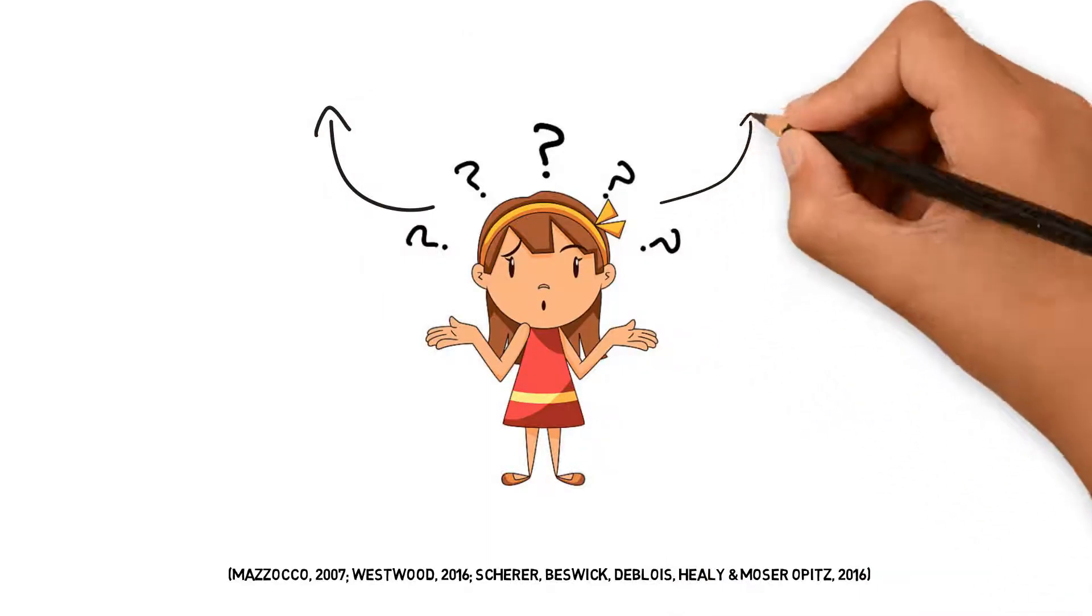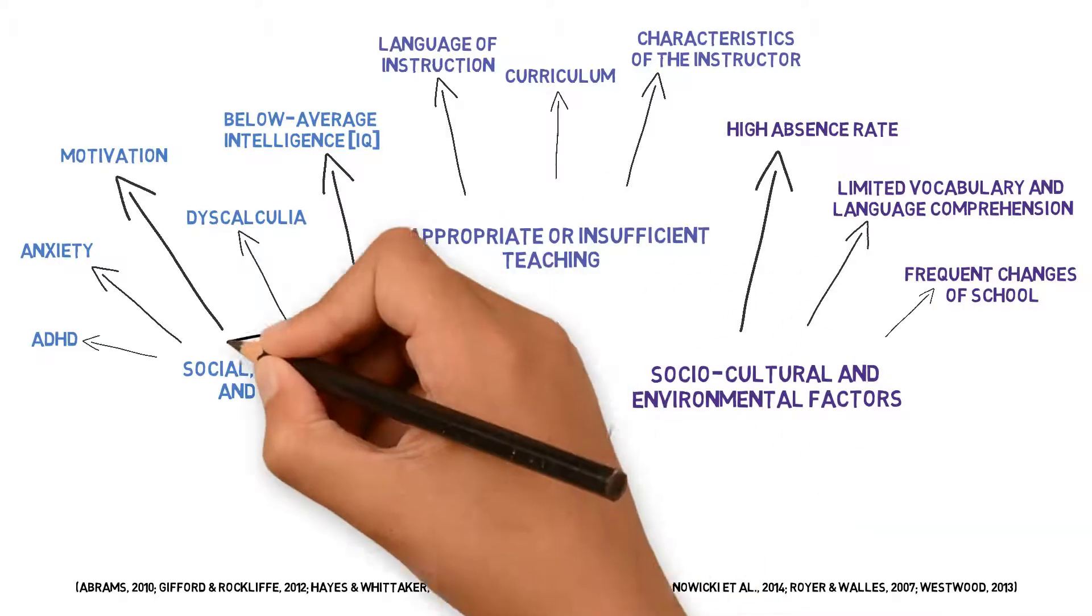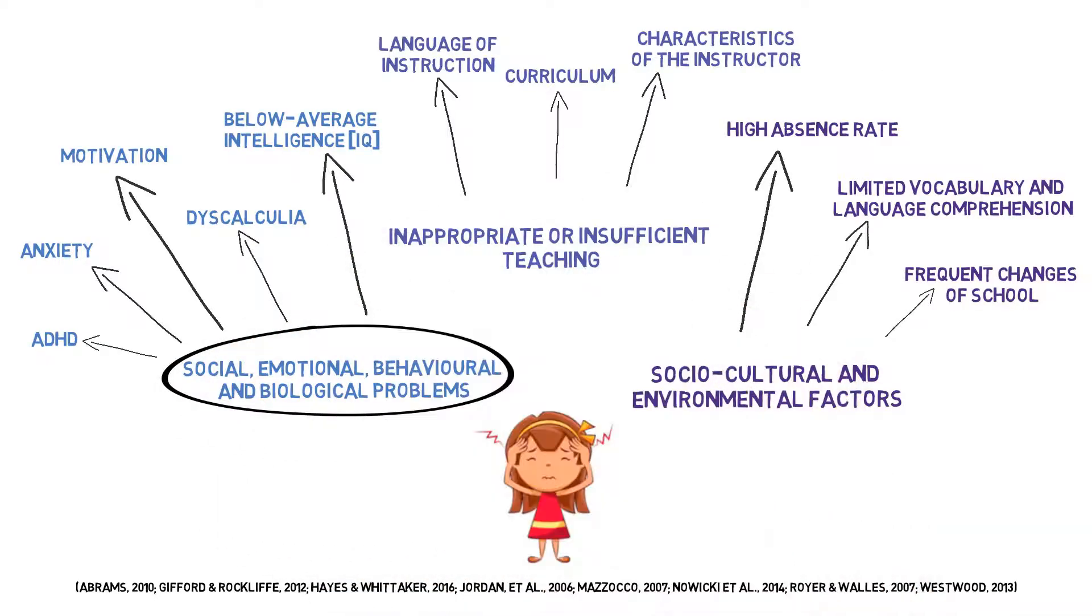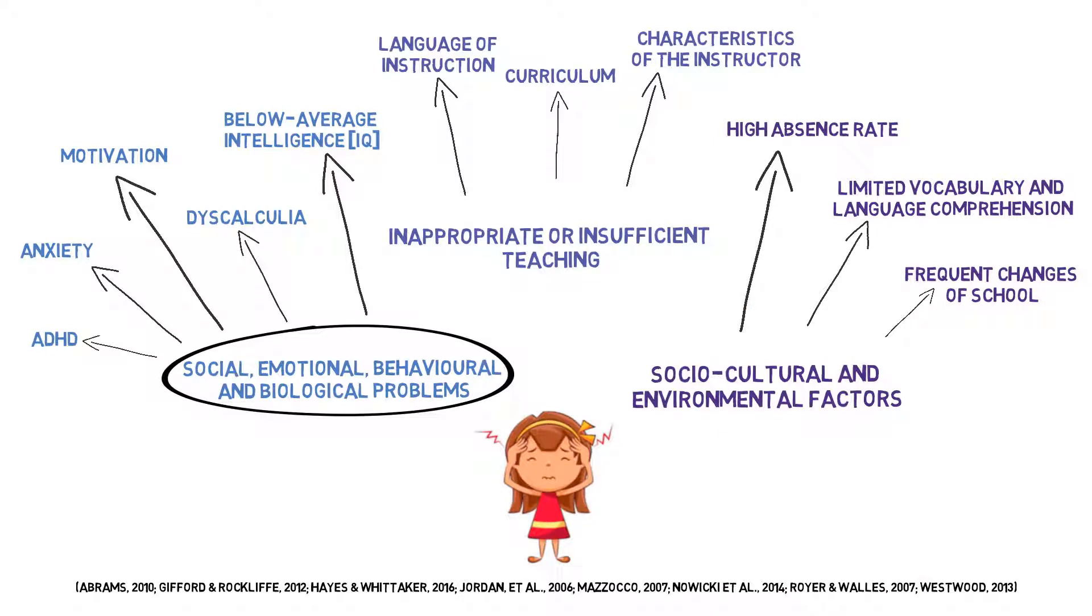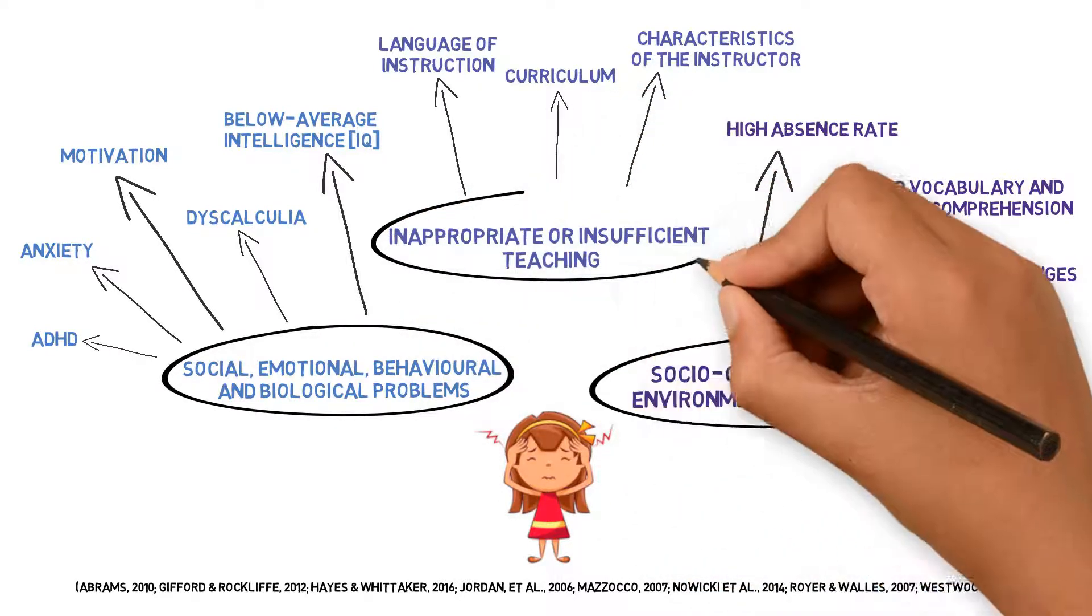Children with mathematical learning difficulties generally demonstrate deficiencies in their numeracy skills and knowledge and mathematical concepts and procedures. These difficulties can be attributed to social, emotional, behavioral and biological problems, socio-cultural and environmental factors, and inappropriate or insufficient teaching.